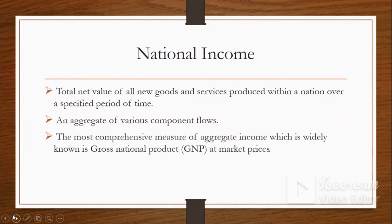However, Jollibee Food Corporation has stores outside the country — in the Middle East, Europe, and the US. If you add the income earned within the country and outside the country, that is what you call gross national product. GNI equals GDP plus income earned from assets abroad, minus income paid to foreign assets operating domestically.